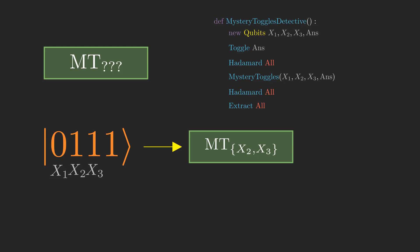In order to understand how this quantum mystery toggles detective works, we'll first need to understand the basic data type of quantum computation: the quantum bit or qubit. A qubit, like a classical bit, can take values of 0 and 1. This angled bracket notation is used to represent the quantum states of 0 and 1. We'll call these basic states.